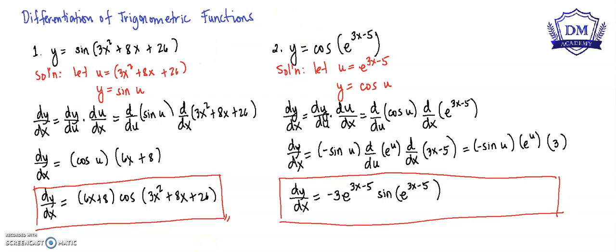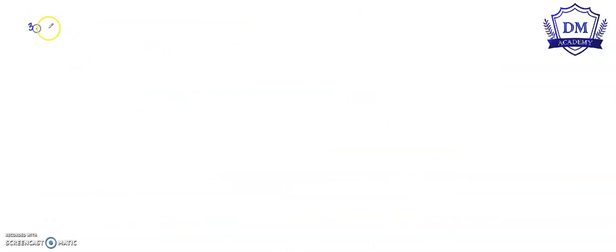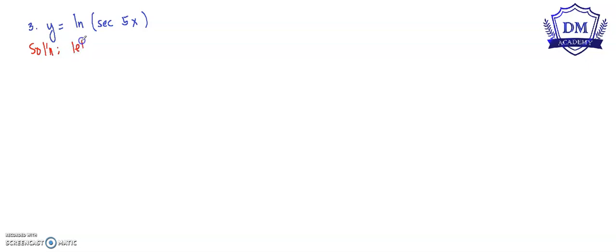Our dy/dx is equal to the ln of secant 5x. For our solution, we let u be equal to secant 5x, so our function y is equal to ln of u.